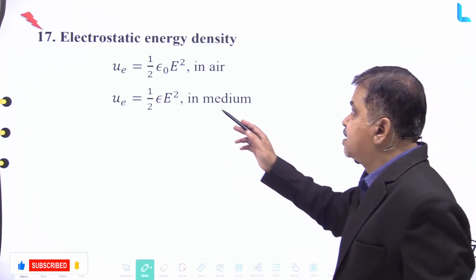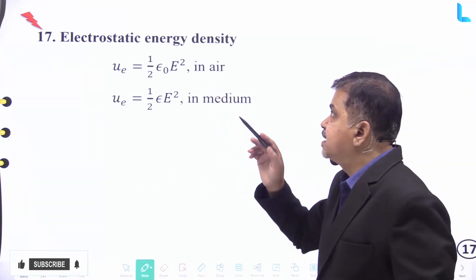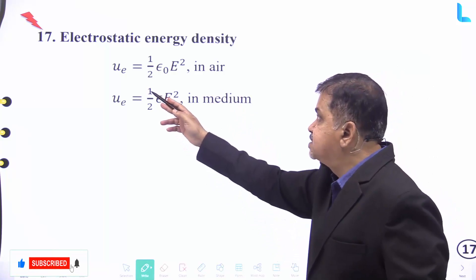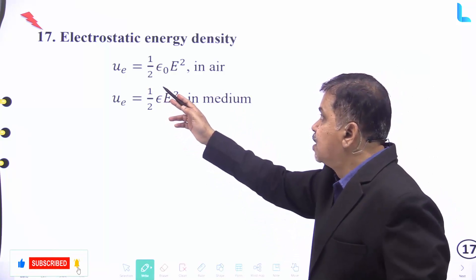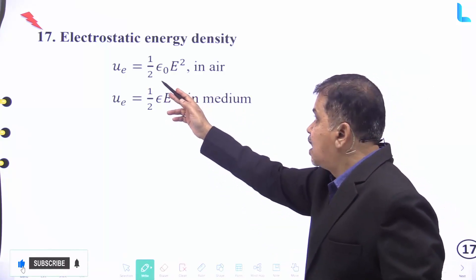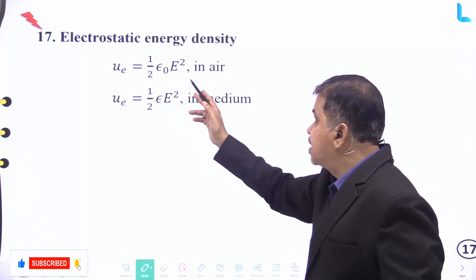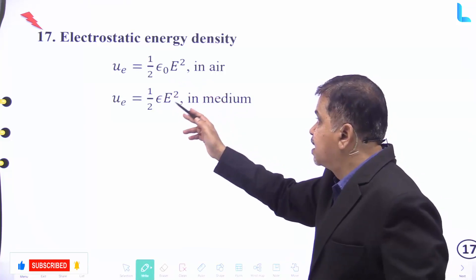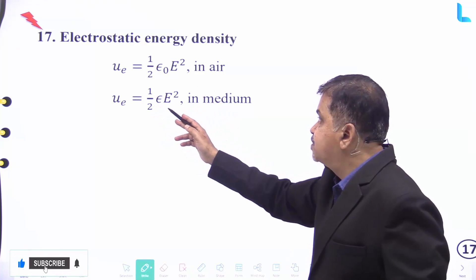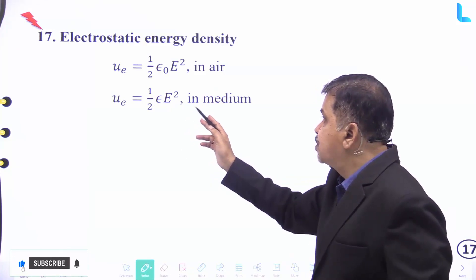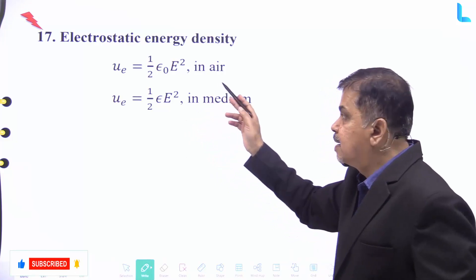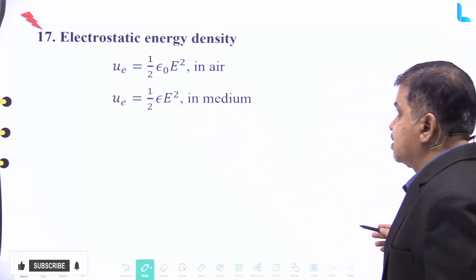Number seventeen: the electrostatic energy density is given by u_e = (1/2)·ε₀·E² for air, and u_e = (1/2)·ε₀·k·E² for any medium other than air.